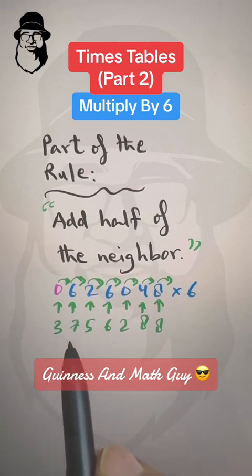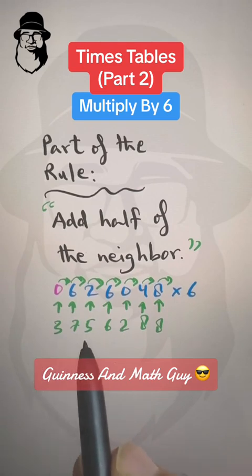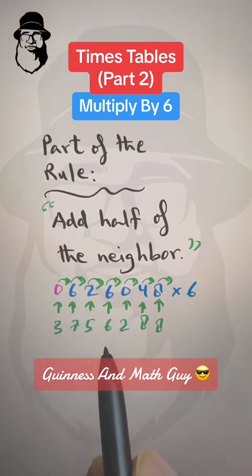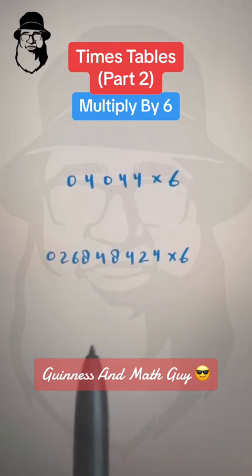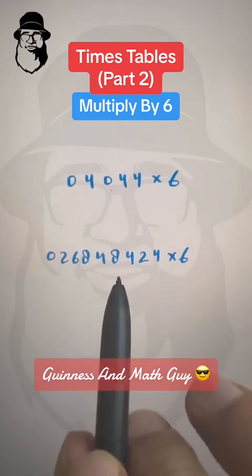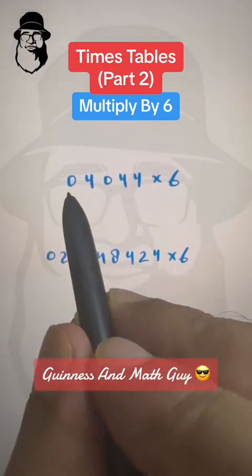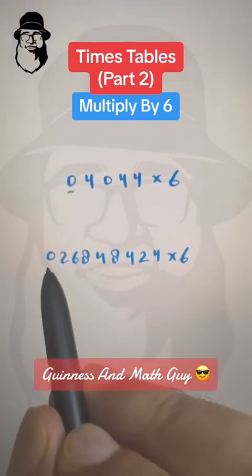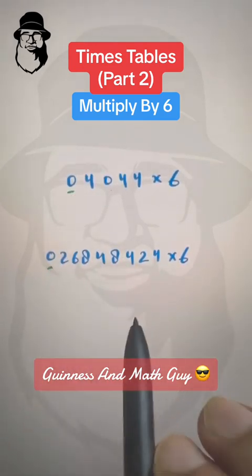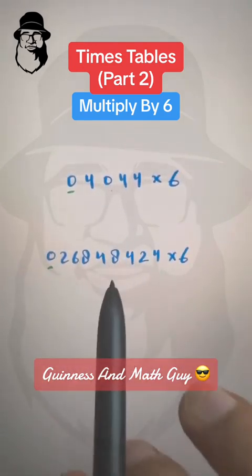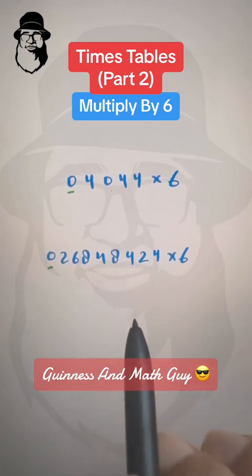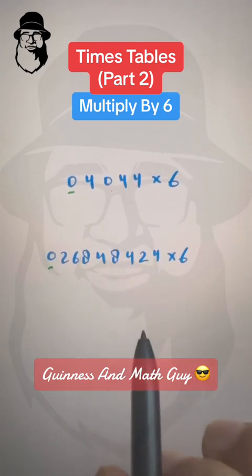And here: 0 plus half of 6 is 3, so 0 plus 3 is 3. Our final answer is 3,756,288. You can pause the video — I have put a 0 for you already — and try these two practice problems, then we will do them together.